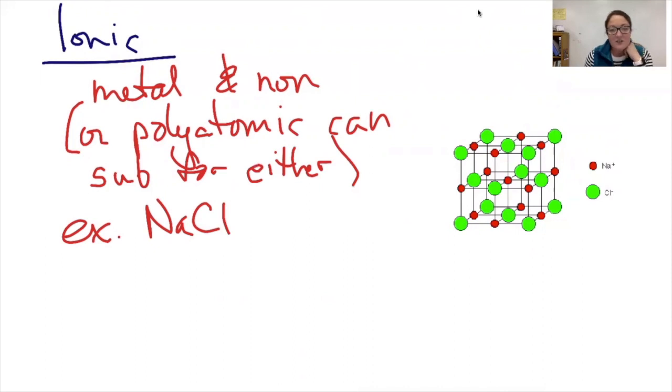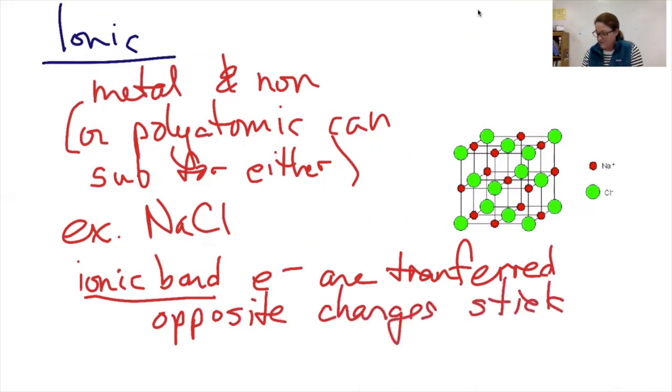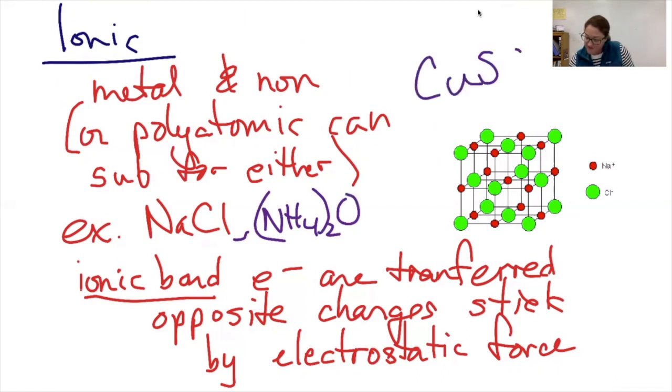So the chlorine now has a negative charge and sodium has a positive charge. And they stick together because they're opposite charges. So in an ionic bond, electrons are transferred. And then opposite charges stick together. And this type of force is called an electrostatic force. Some other examples, besides the classic sodium chloride example, when I said we could have a polyatomic ion substitute in, ammonium oxide would be an example of an ionic compound. It could be something like copper sulfate would also be an example of a polyatomic ion that forms an ionic compound.